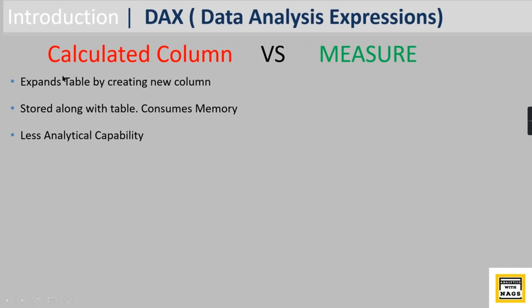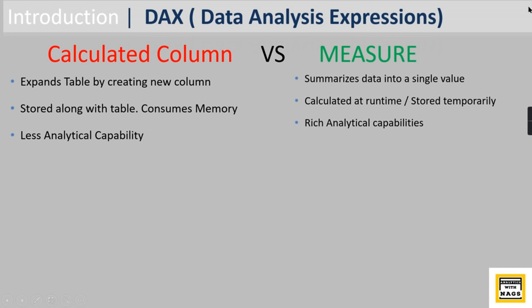A calculated column expands a table by creating a new column. When you create a calculated column, it is stored along with the table, so for one million rows the new column is also stored — it consumes memory. It has less analytical capability and is mostly used for simple calculations like addition, multiplication, or string concatenation.